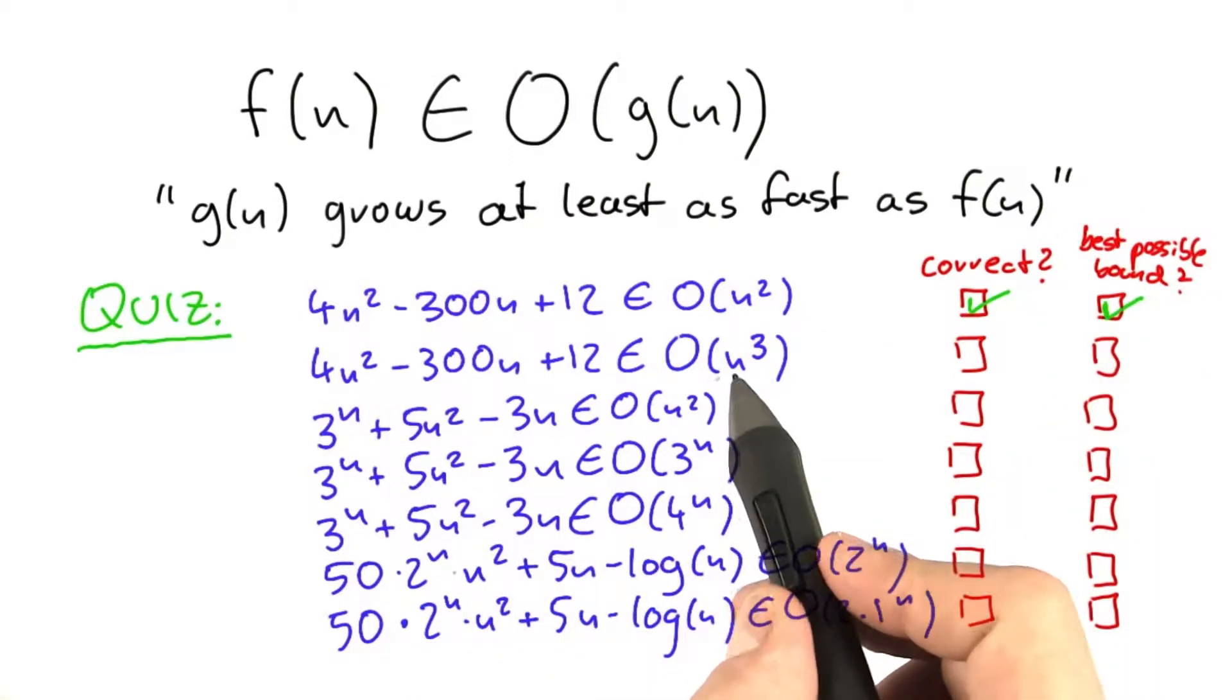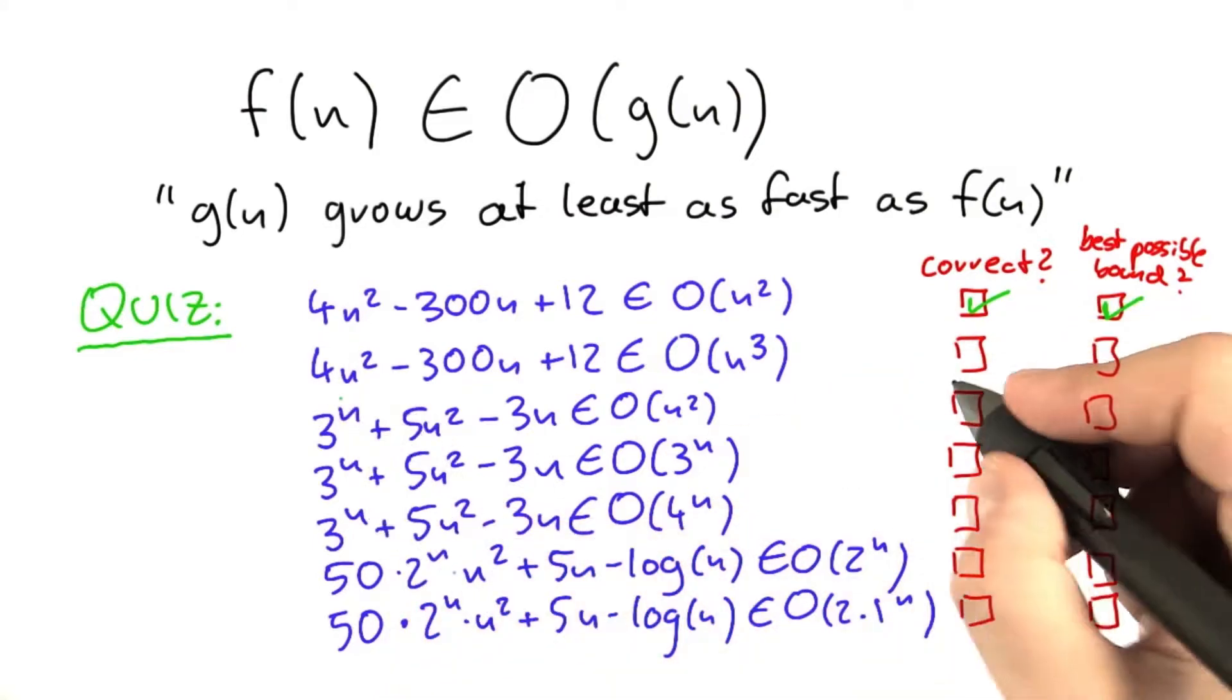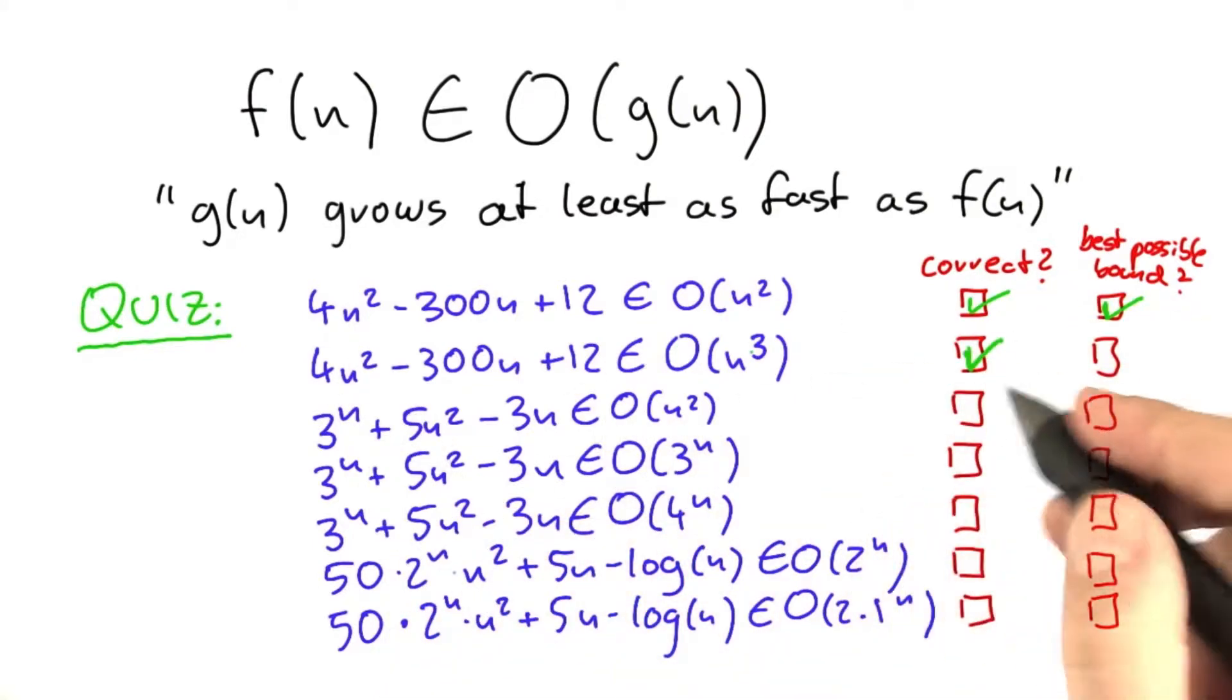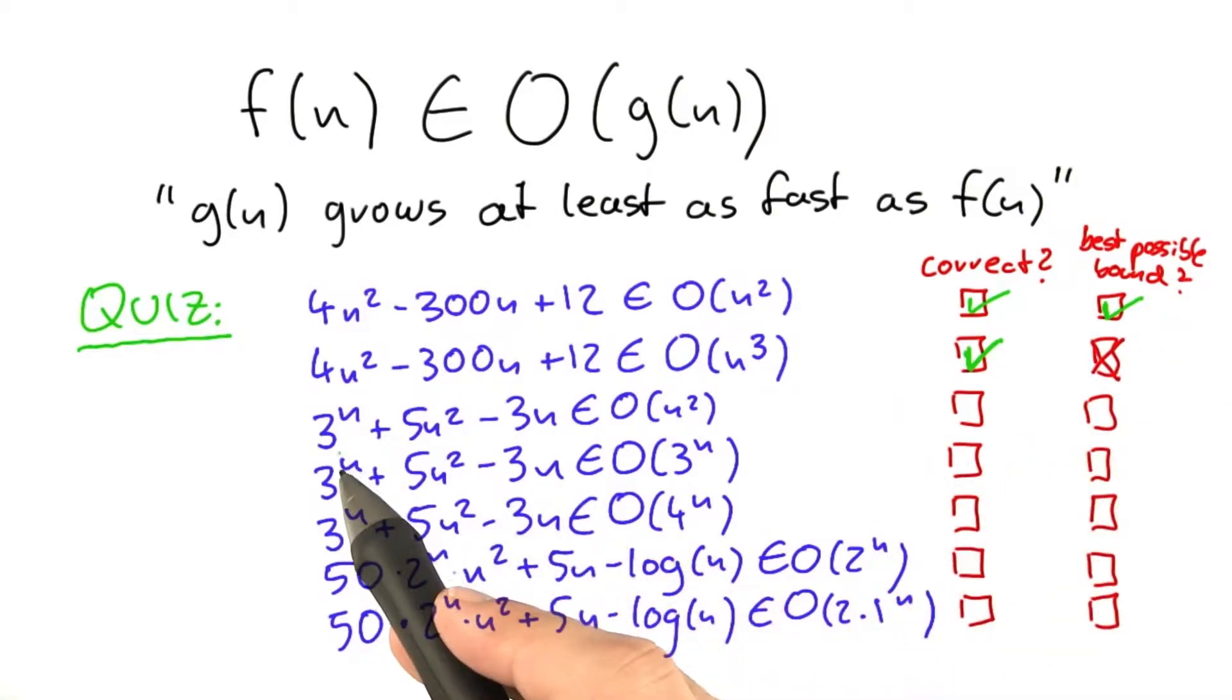The second one is also correct because n to the power of 3 grows faster than n squared. But it's not the best possible bound we can give because we already found out that n squared is the best possible bound that we can give.